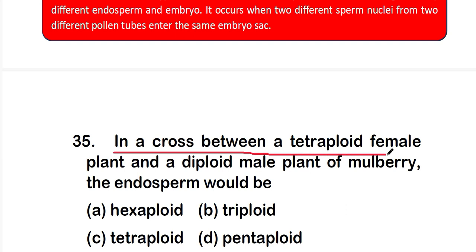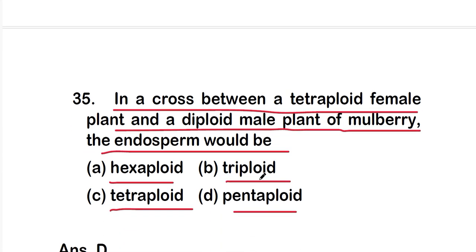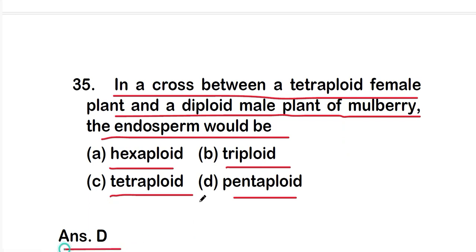Question 35: in a cross between a tetraploid female plant and a diploid male plant of mulberry, the endosperm would be option A: hexaploid; option B: triploid; option C: tetraploid; or option D: pentaploid. The right answer is option D — pentaploid.